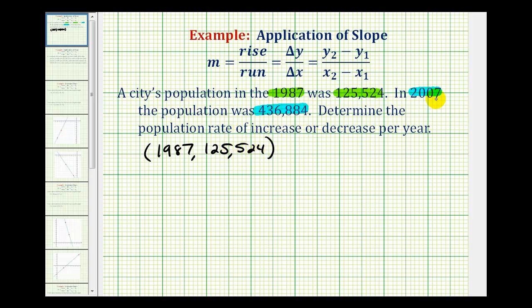And for the second point, we'll use the information from 2007. The population is 436,884.